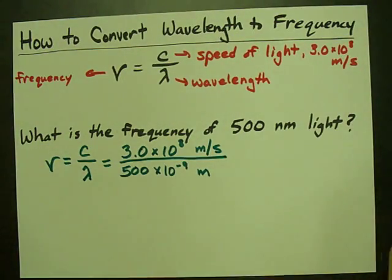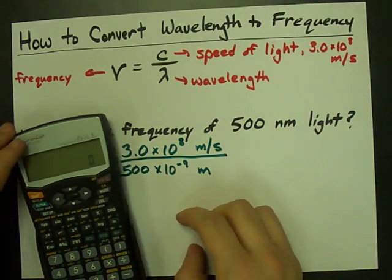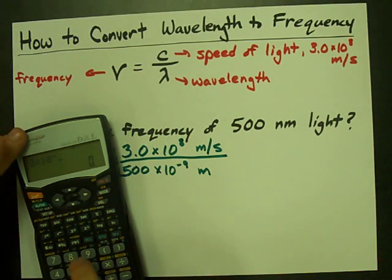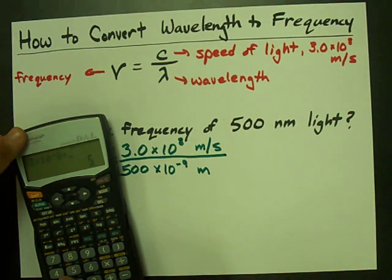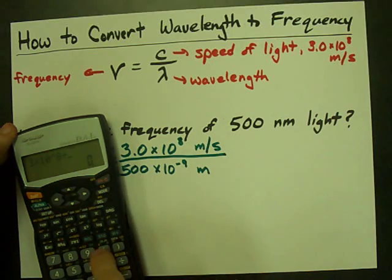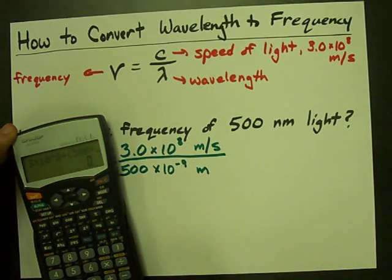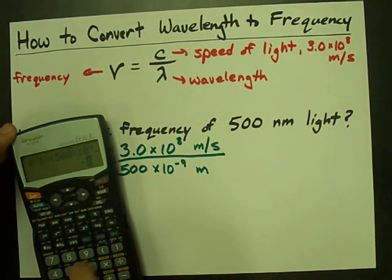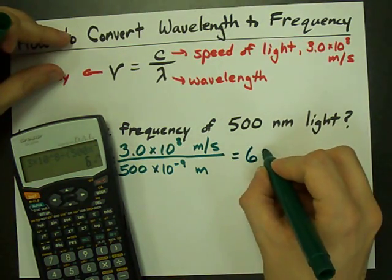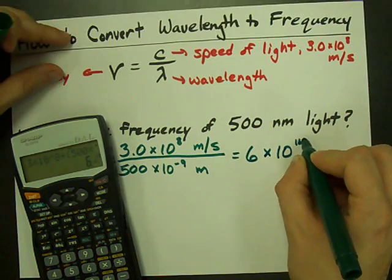All I have to do is plug this into a calculator. 3 times 10 to the power of 8 divided by 500. I'll put this in brackets, 500 times 10 to the power of negative 9. And I get 6 times 10 to the power of 14.